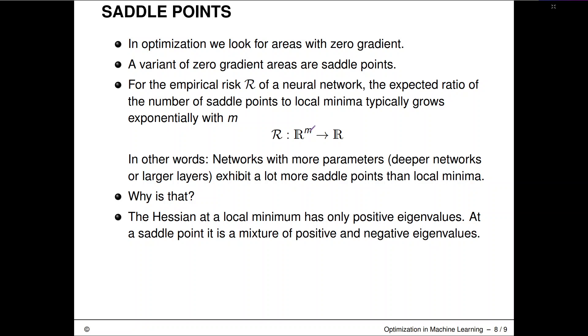We can also try to understand this better by looking at the Hessian matrix and looking at potential configurations of Hessian matrices we could encounter in such a landscape. If we are at a local minimum, the Hessian matrix must have only positive eigenvalues. At a saddle point, it's a mixture of positive and negative eigenvalues.